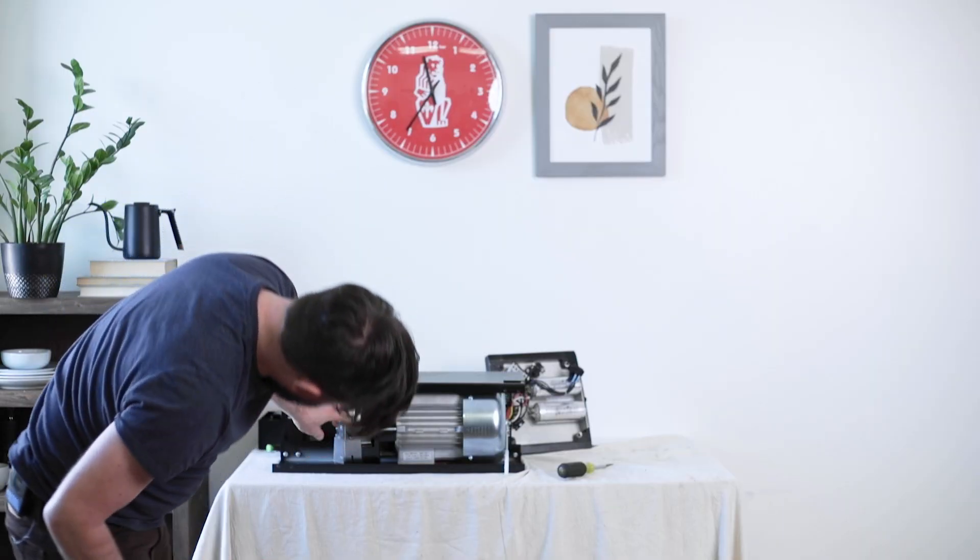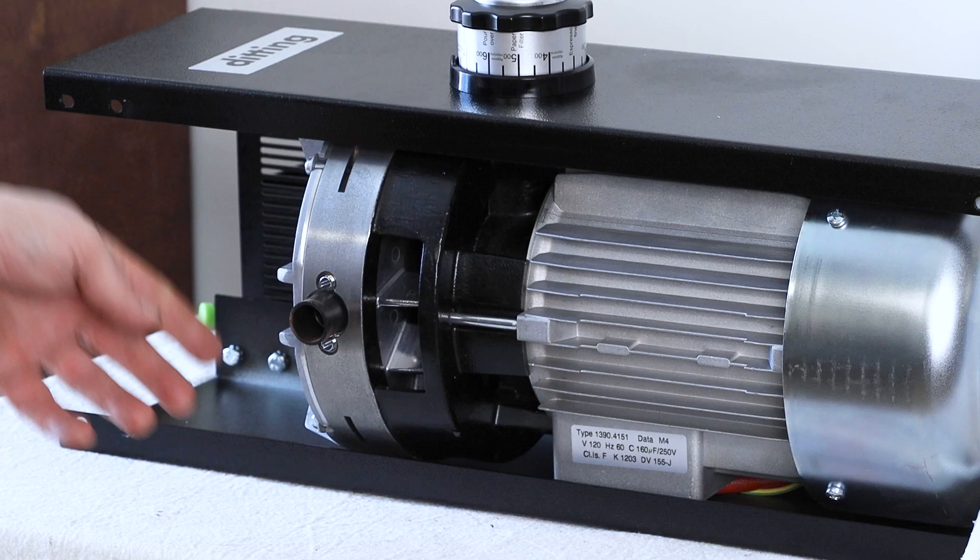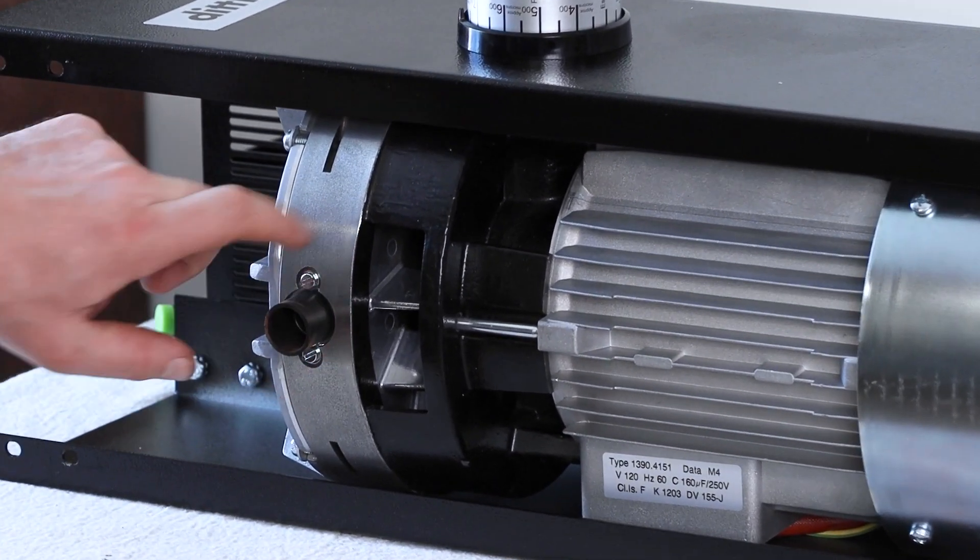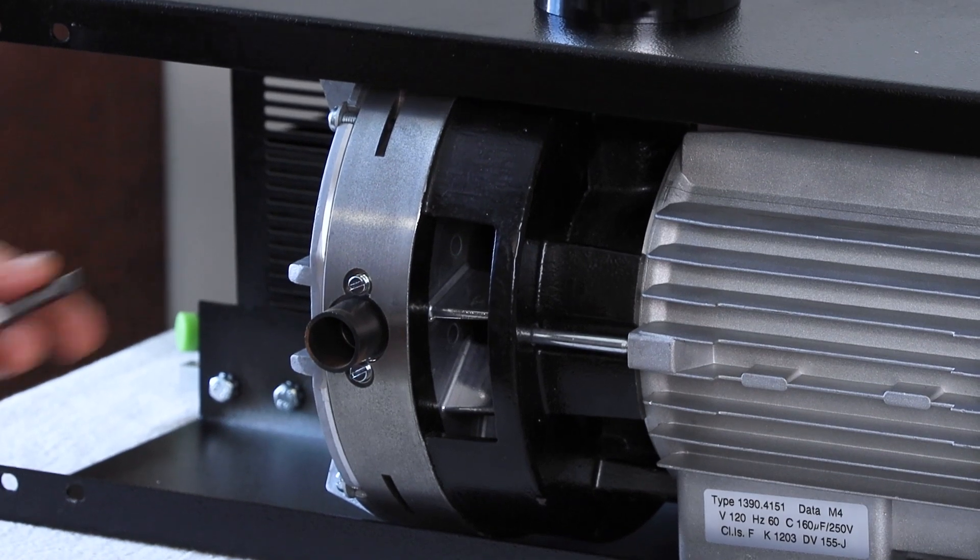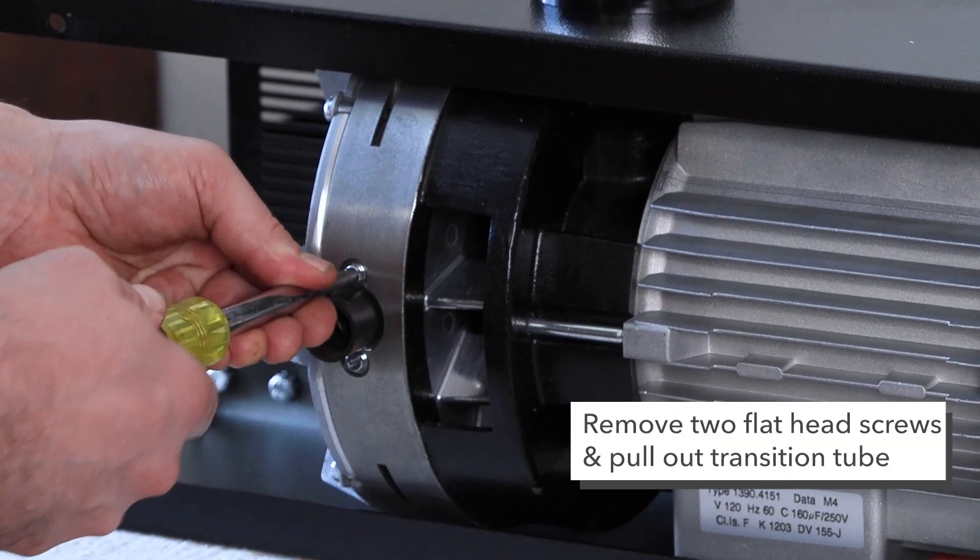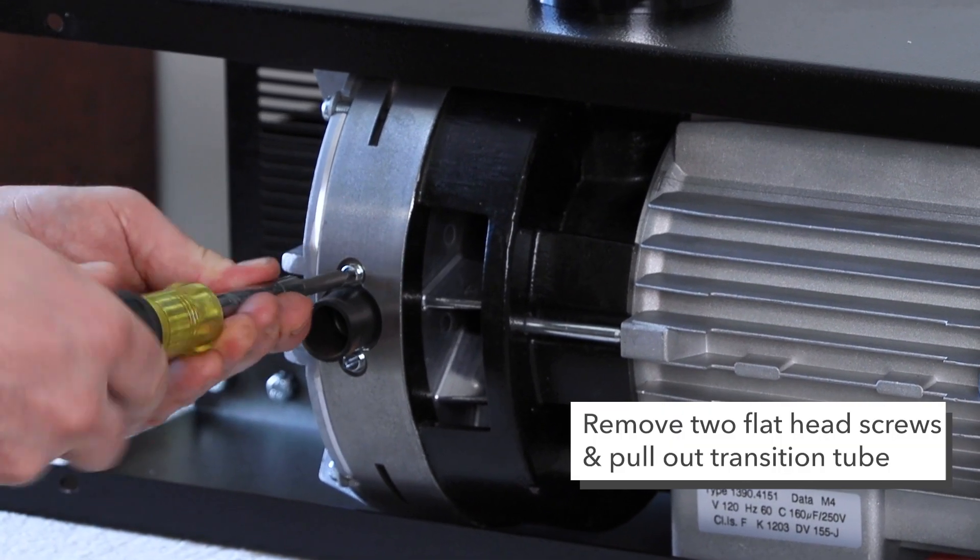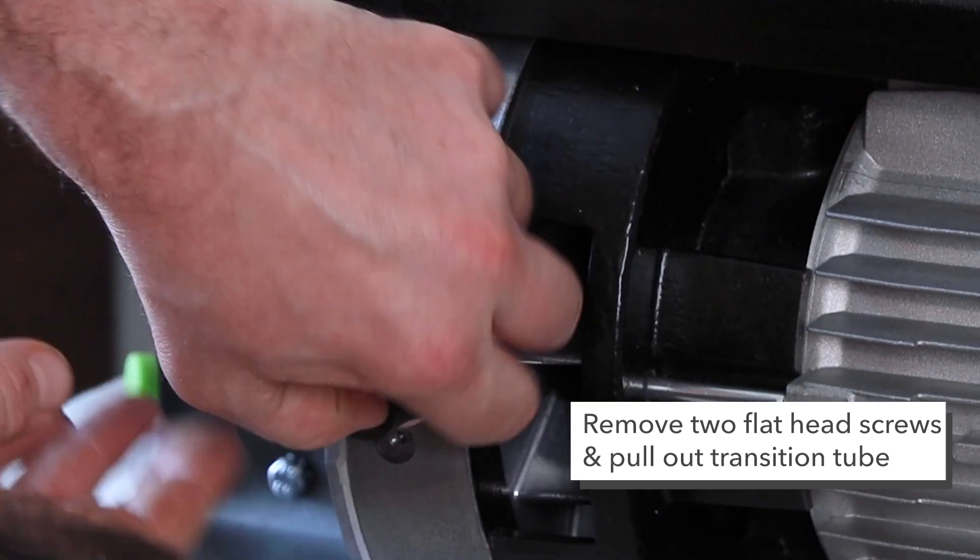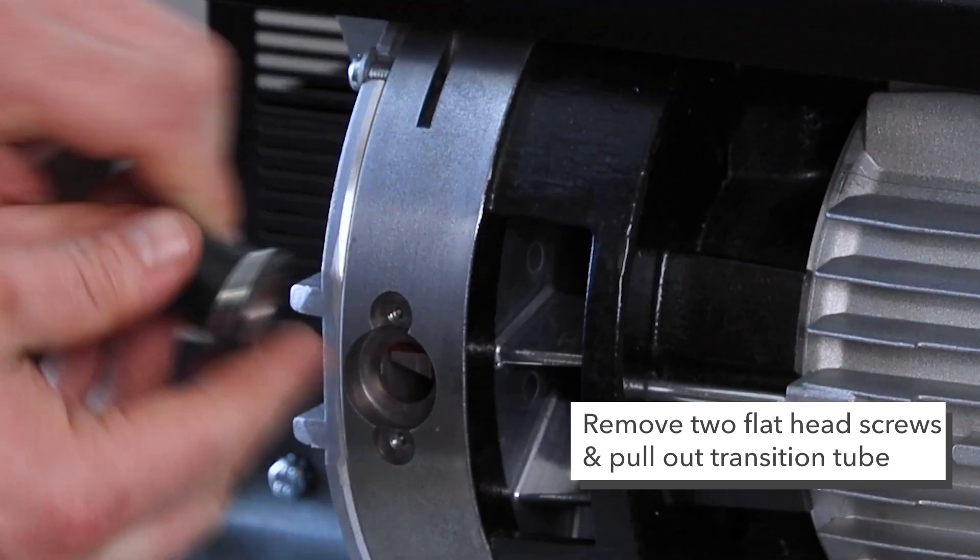Now you can see we have pretty good access to the transition tube. It's held in place by two screws that are pressing up against a couple metal washers behind the tube. So I'm just going to go ahead and remove those screws. And once I have those out, I can pull the tube out.